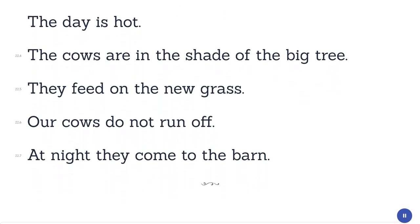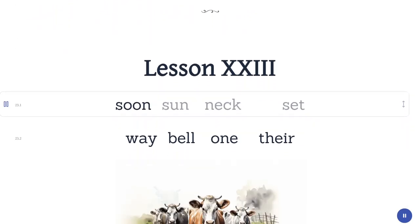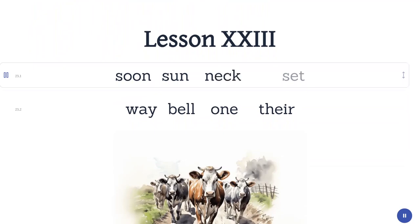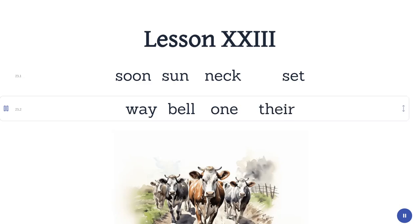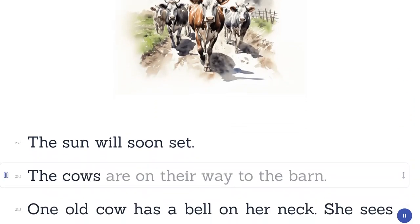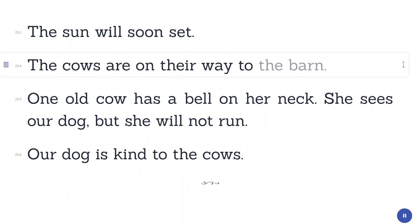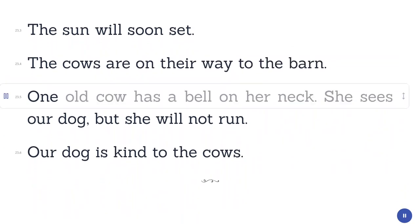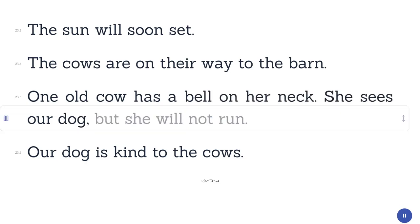Lesson 23. Soon. Sun. Neck. Set. Way. Bell. One. The sun will soon set. The cows are on their way to the barn. One old cow has a bell on her neck. She sees our dog, but she will not run. Our dog is kind to the cows.